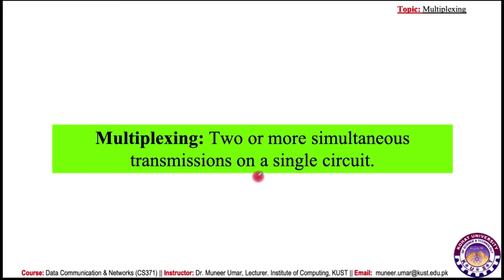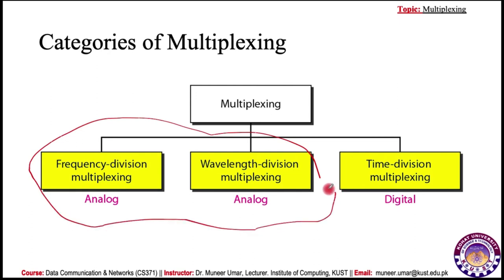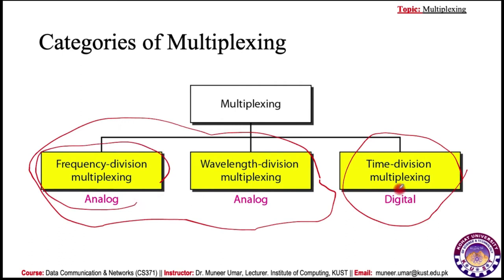Multiplexing allows two or more simultaneous transmissions on a single circuit. The categories of multiplexing are: frequency division multiplexing (FDM), wavelength division multiplexing (WDM), and time division multiplexing (TDM). The first two are used for analog signals, while TDM is used for digital signals — used for digital computer networks. In this lecture we will study FDM and TDM. WDM is not in our course so we will not discuss it.